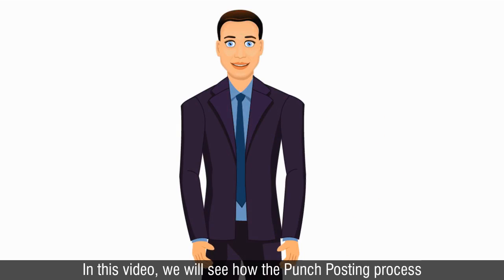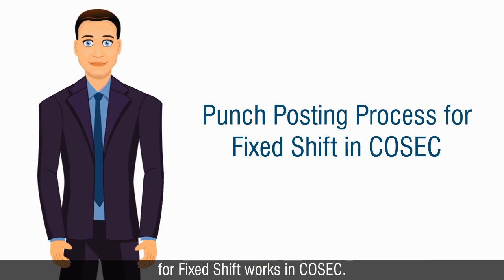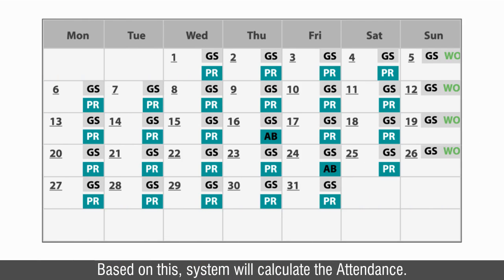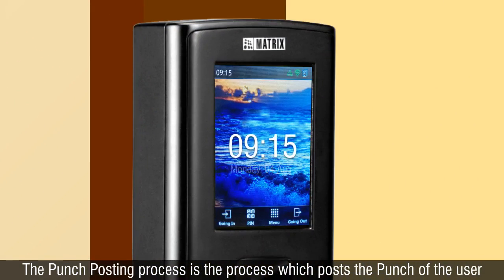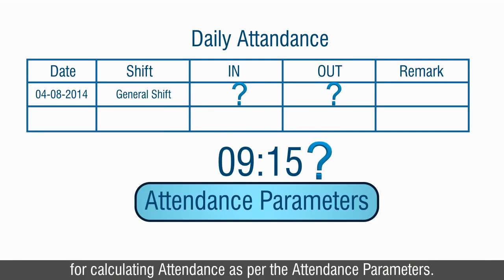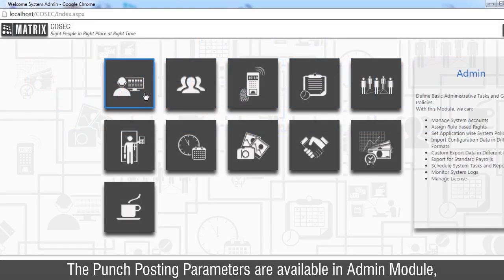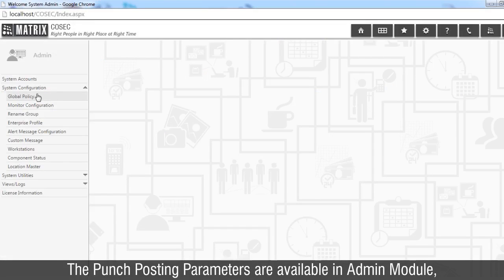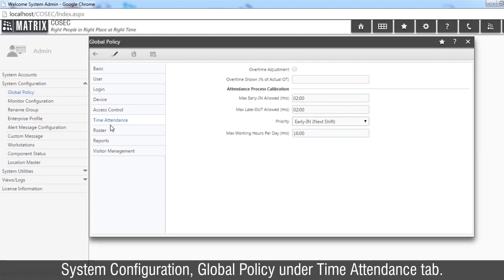Hi friends, in this video we will see how the punch posting process for fixed shift works in Cosec. Based on this, the system will calculate the attendance. The punch posting process posts the punch of the user for calculating attendance as per the attendance parameters. The punch posting parameters are available in Admin Module, System Configuration, Global Policy under the Time Attendance tab.